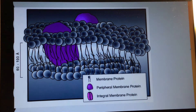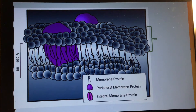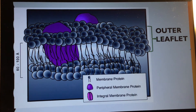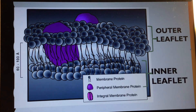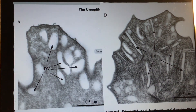This is a picture of the phospholipid bilayer. The outer leaflets refer to the phospholipid layer that is facing outside the cell, facing the extracellular fluid. The inner leaflets refer to the leaflet that is facing the intracellular fluid.